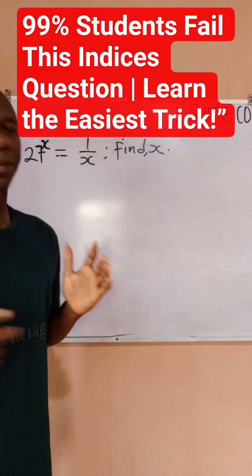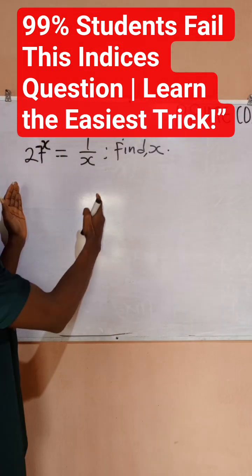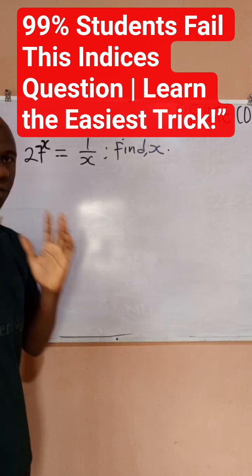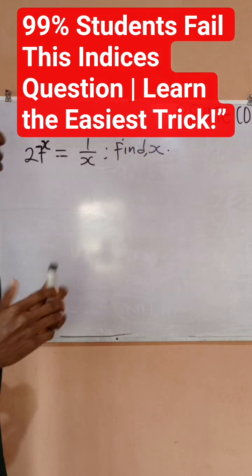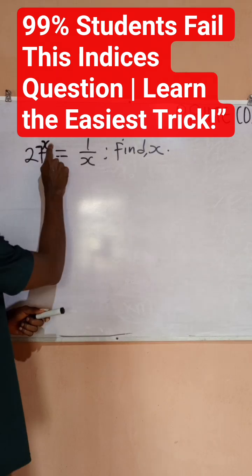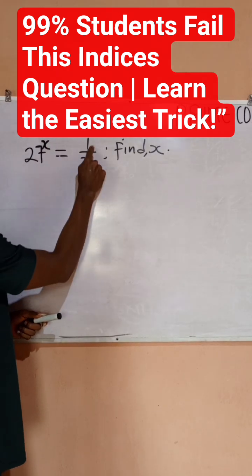Hello guys, this is Prime Concept. Can you solve this problem on indices on the board? Follow me through this video. Let's solve the question together. The question is: 27 raised to power x equals 1 divided by x. Find x.